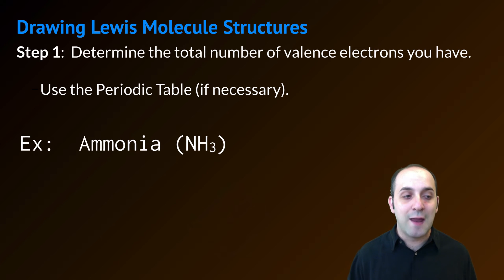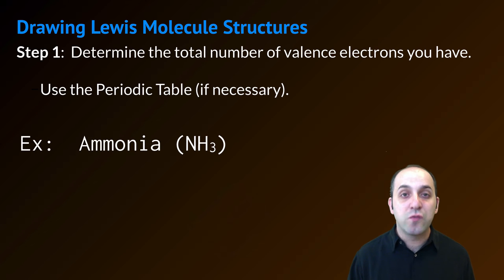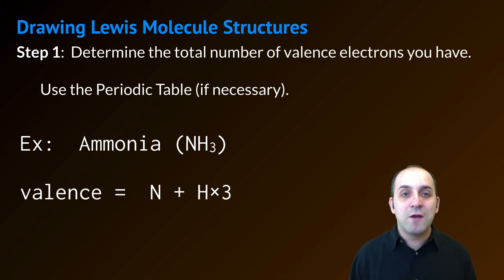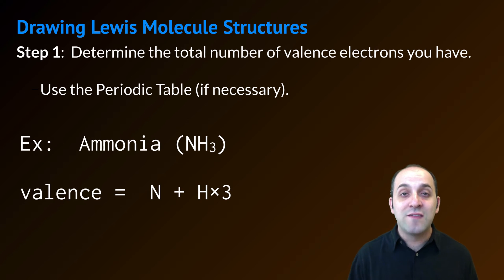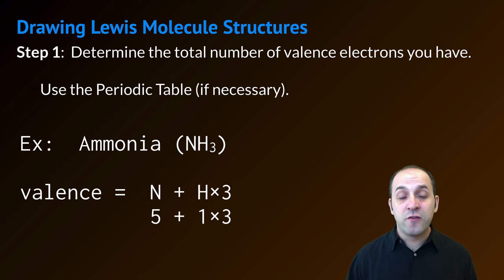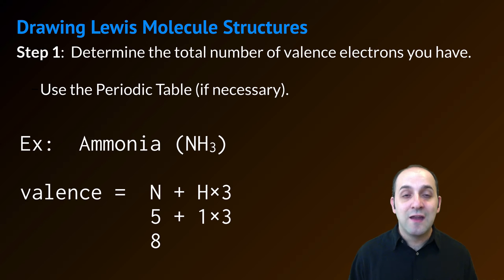We're going to work through an example of ammonia together. Ammonia has the chemical formula NH3, so it's one nitrogen atom and three hydrogen atoms. When we need to figure out the total number of valence electrons that ammonia has, it's going to equal the valence electrons that nitrogen has plus the valence electrons that each of the three hydrogens have. Nitrogen has five valence electrons and hydrogen has one, so the total number of valence electrons that ammonia has is eight total valence electrons.